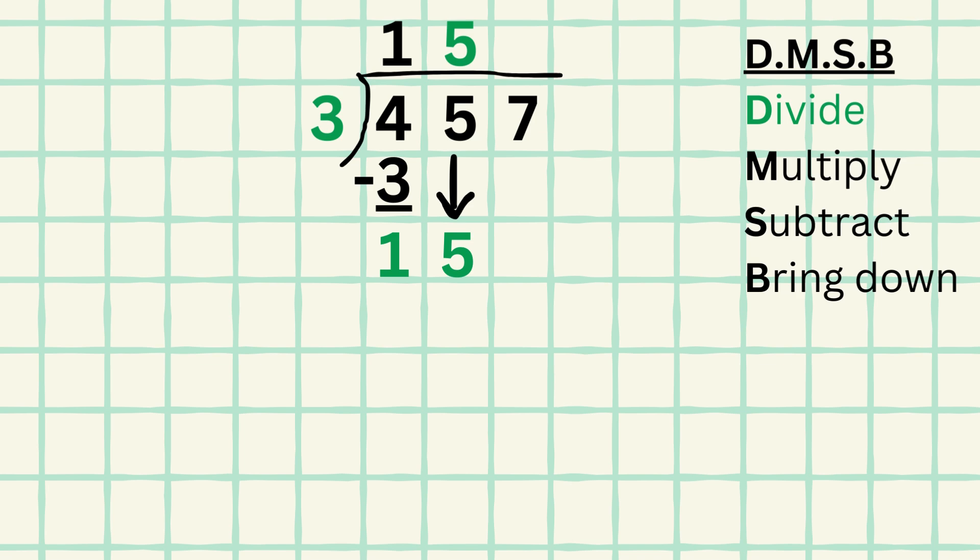We can then multiply 5 times 3, which again leaves us with 15. And when we subtract 15 from 15, of course, we get 0.